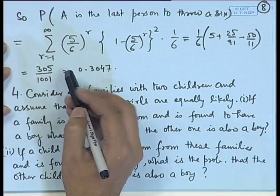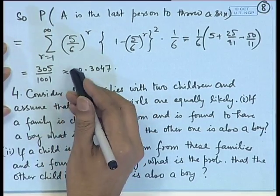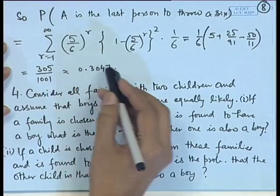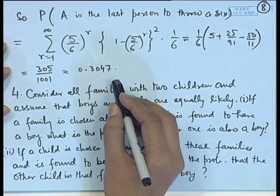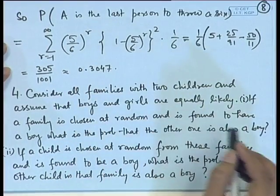Once again you can see that this is less than the probability that A is the first to throw a 6.